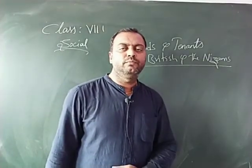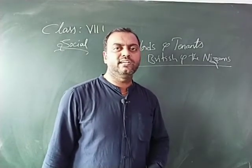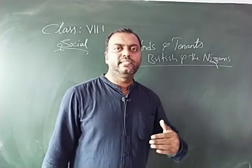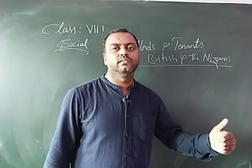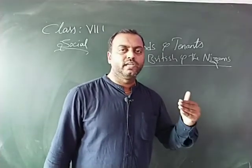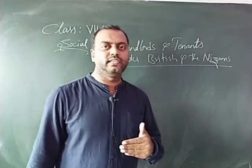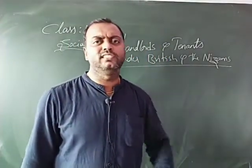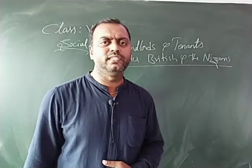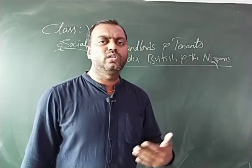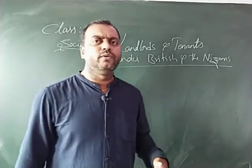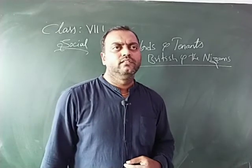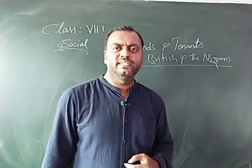Right from the Mughal period, we have seen intermediaries like Zamindars who used to collect land revenue and remit a major part to the king or government, keeping a little amount for their own charges. For example, if 100 rupees was collected, 90 rupees was deposited to the government and 10 was kept by these people.